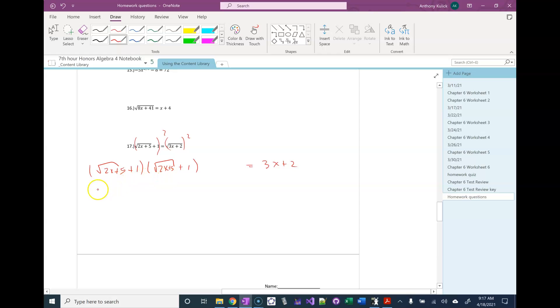So if I multiply the first together, I get square root of 2x plus 5 squared. And then 2x plus 5 times 1 is just 2x plus 5. And then 1 times 2x plus 5 is just 2x plus 5. And 1 times 1 is 1.